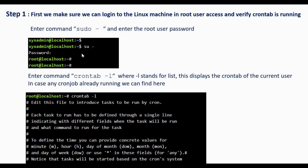The first step when you log into the Linux machine is to make sure you have root user access. Give 'su' and enter the root user password, and make sure crontab is running. You simply give 'crontab -l' and you will get the output.